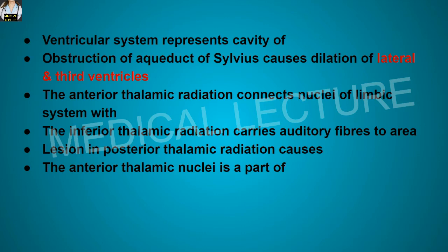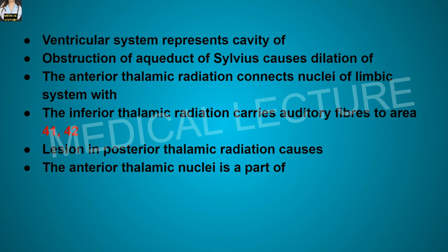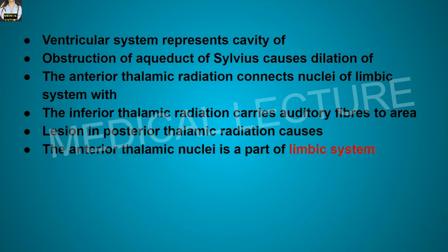The anterior thalamic radiation connects nuclei of the limbic system with the cerebral cortex. The inferior thalamic radiation carries auditory fibers to areas 41 and 42. Lesion in the posterior thalamic radiation causes contralateral homonymous hemianopia. The anterior thalamic nucleus is a part of the limbic system.